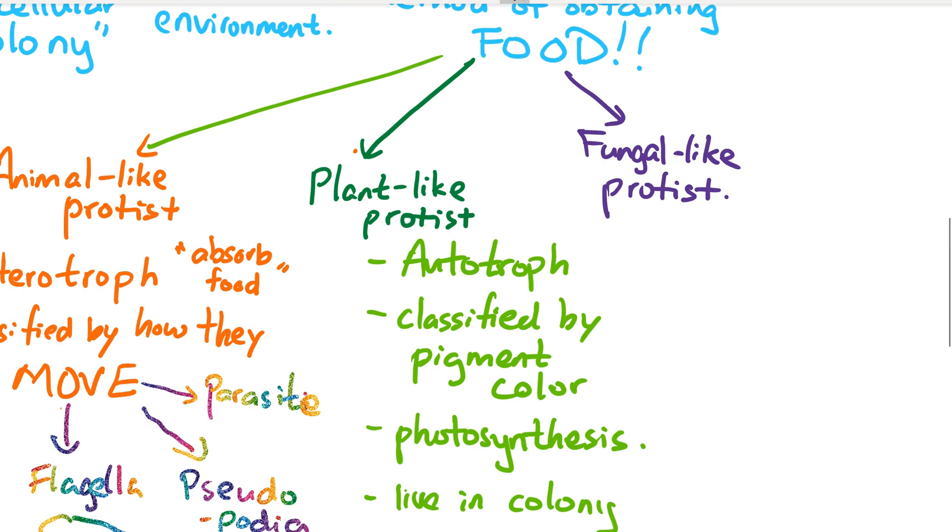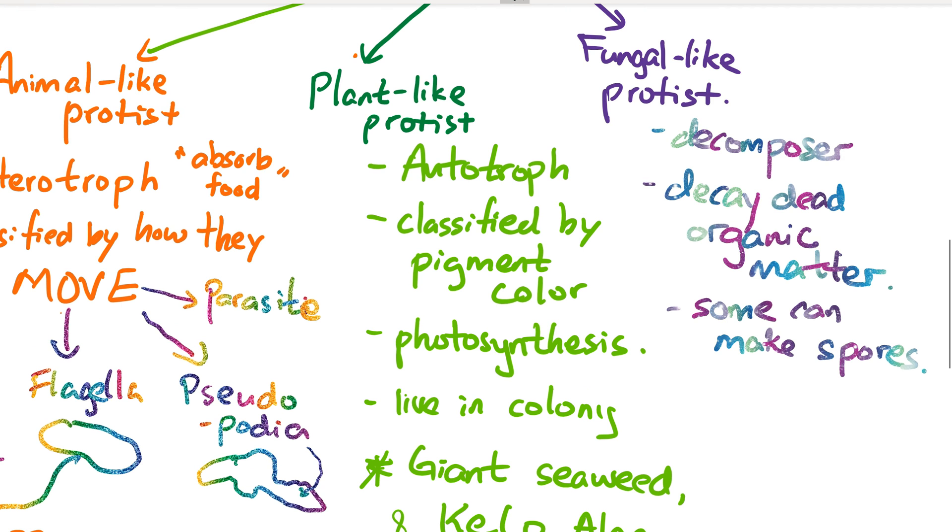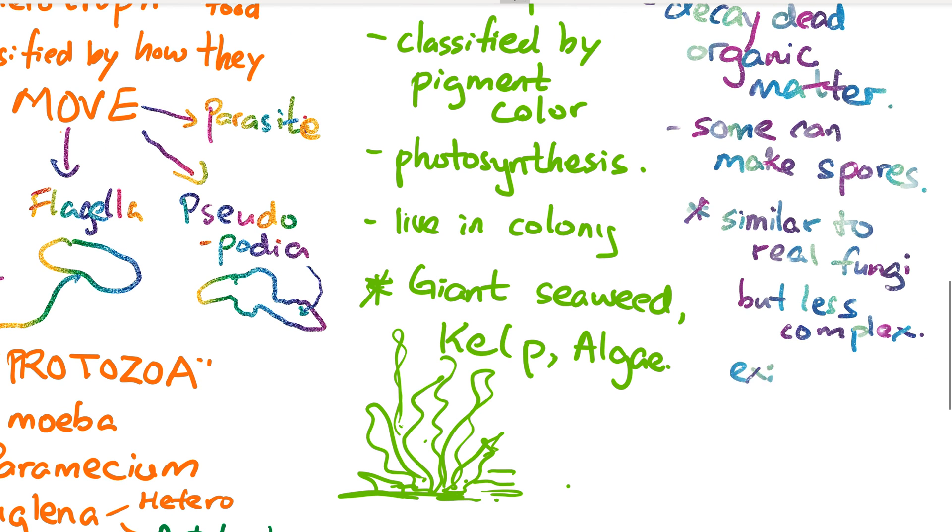Fungal-like protists behave like fungi. They are decomposers that feed on decayed or dead organic matter. They can secrete acids or enzymes to break down material and absorb nutrients. Some can even make spores—not mushrooms, but they reproduce through spore formation. They're like a simpler version of fungus but not exactly a fungus, which is why biologists categorize them as fungal-like protists. Examples include slime mold and water mold.